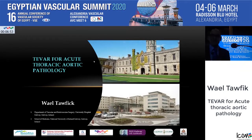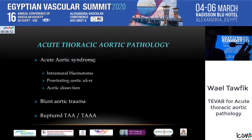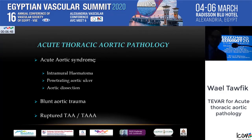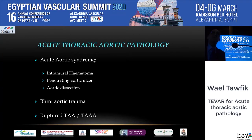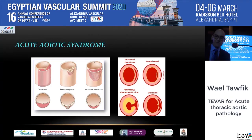Drastic aortic pathology is a very broad term that covers a lot of pathology, all the way from acute aortic syndrome, aortic trauma, and ruptured aneurysms. I'm going to quickly run through most of them.